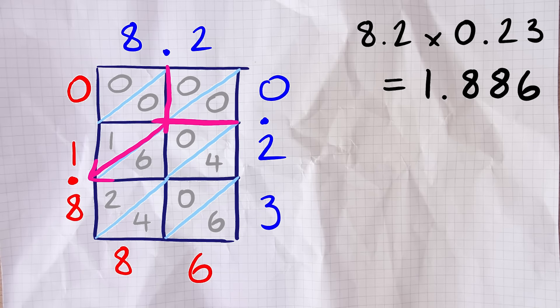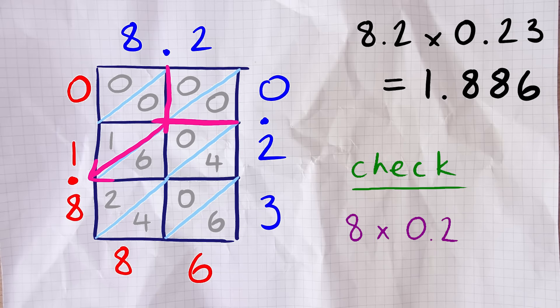So 8.2 times 0.23 is 1.886. The last thing is to check that it's roughly the answer we were expecting. To do that I just round each of the numbers off to one significant figure. So 8.2 I'll round off to 8 and 0.23 I'll round off to 0.2. I know that 8 times 2 is 16, so 8 times 0.2 is going to be 10 times smaller than 16, in other words it's going to be 1.6. So the answer should be somewhere in the region of 1.6 and it is. 1.886 is pretty close to 1.6. If we ended up with 18.86 or 188.6 something like that, we would know we've gone wrong somewhere and would just have to go back check we put our decimal points in the correct place.